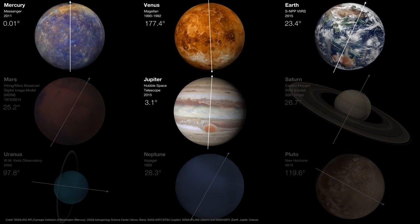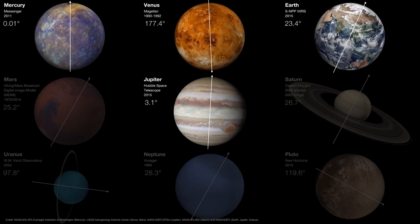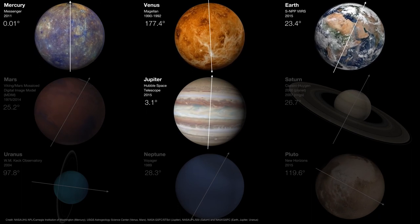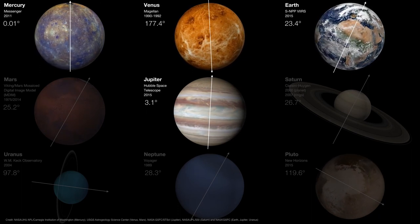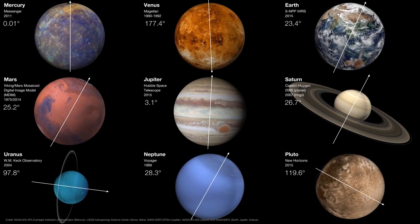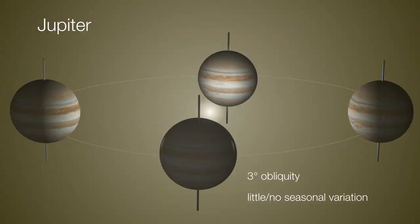By comparison, Mercury, Venus, and Jupiter are essentially not tilted with respect to the ecliptic — with respect to their orbital paths around the sun. So they won't experience very much seasonal variation. Jupiter, for example, has only about a three-degree obliquity, so there's essentially little axial tilt to speak of and not much seasonal variation from a Jovian summer to a Jovian winter.